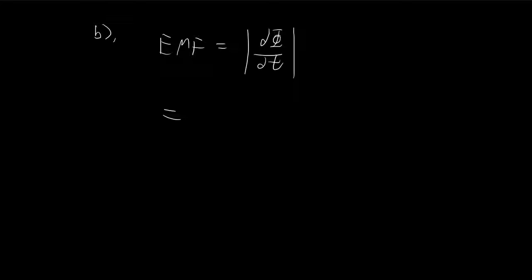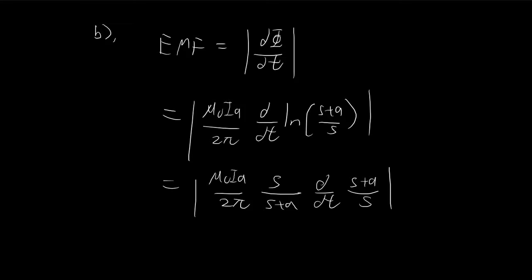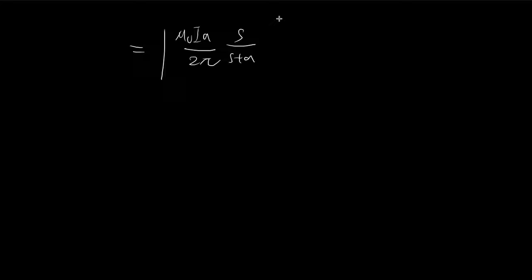Taking the derivative of this expression, I can pull out all the constants first, and then differentiate the remaining term using the chain rule — don't forget the absolute value sign. I'm going to treat the argument as one single variable. The derivative of natural log of something is just 1 over that something. So we get 1 over this expression, and then we take the time derivative of whatever was inside — which is s divided by s plus a — so we need to apply the quotient rule.